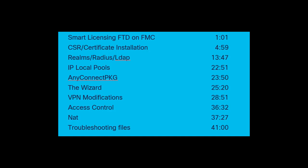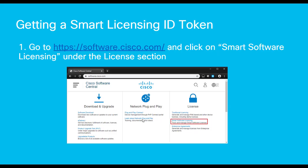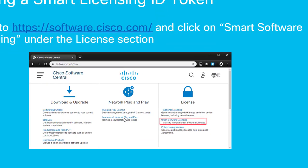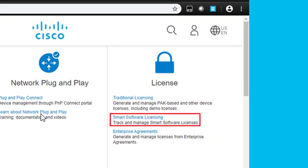The first step that you will need to complete for the AnyConnect remote access will be to make sure that you have the appropriate licenses. You will need both an FTD device that is registered with a token that contains the strong encryption, as well as the AnyConnect licenses associated with this device. To do this, we'll go to software.cisco.com, and underneath the Smart Software Licensing section, we'll click there.